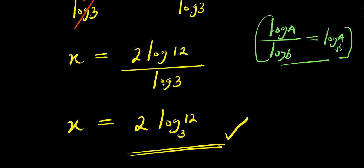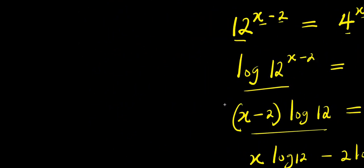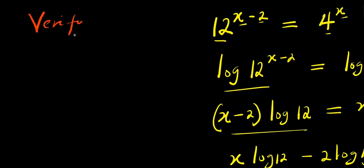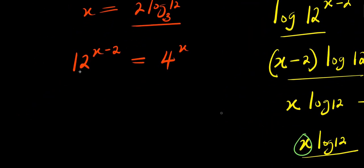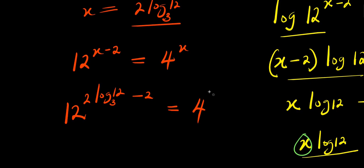The next step is to insert this value of x and verify it. x equals 2 times log 12 to the base of 3, and the original equation is 12 to the power of (x minus 2) equals 4 to the power of x. Substituting, we have 12 to the power of (2 times log 12 to the base of 3 minus 2) equals 4 to the power of (2 times log 12 to the base of 3).